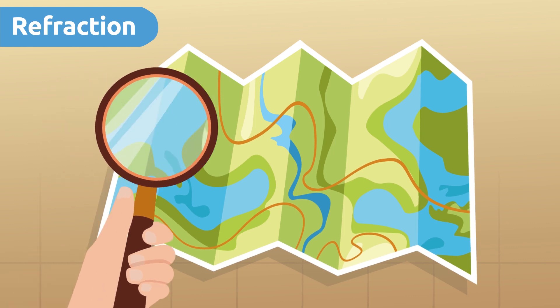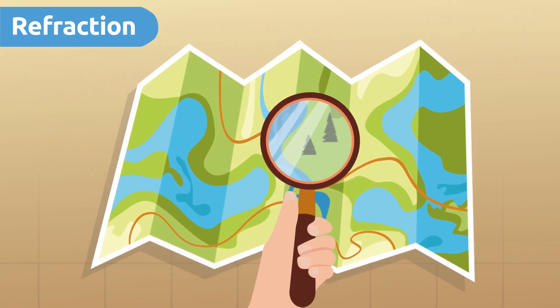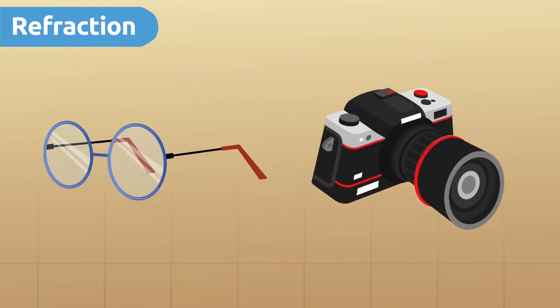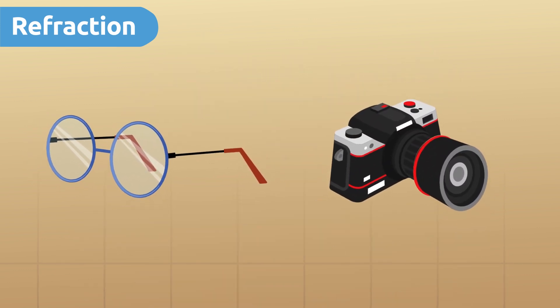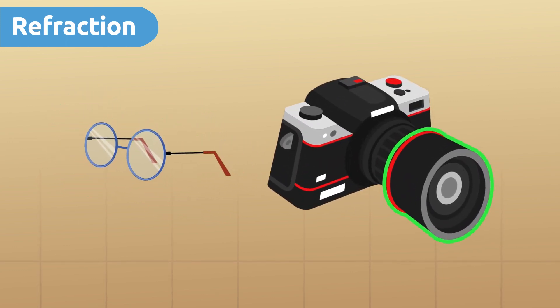This property causes us to see objects differently, like when we look at an object through a magnifying glass. Refraction is the property we use to create lenses, which you can find, for example, in eyeglasses or camera lenses.